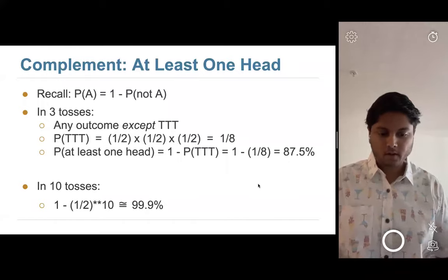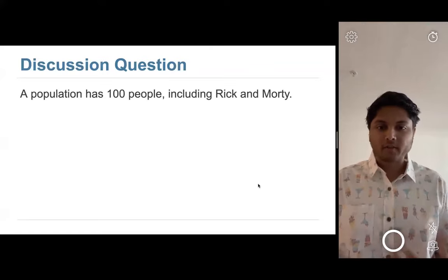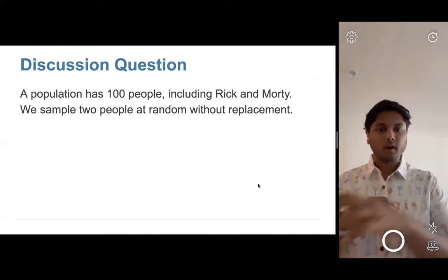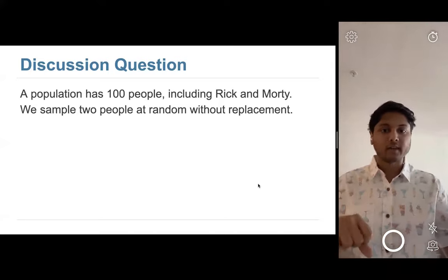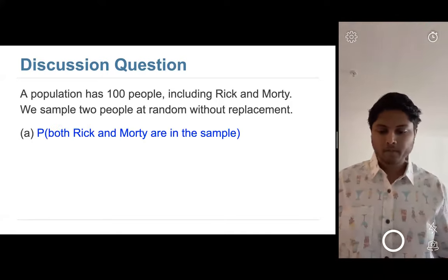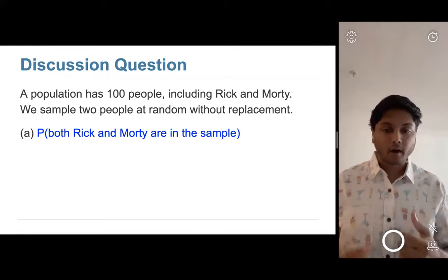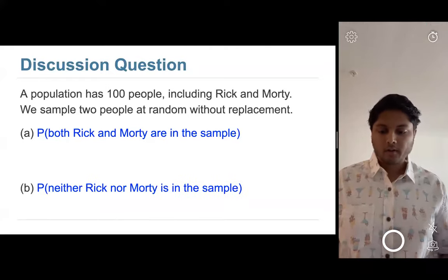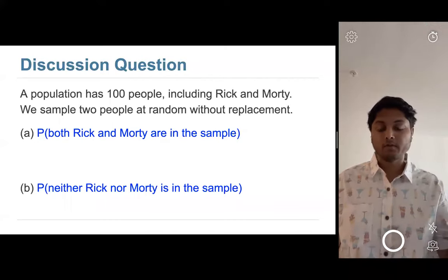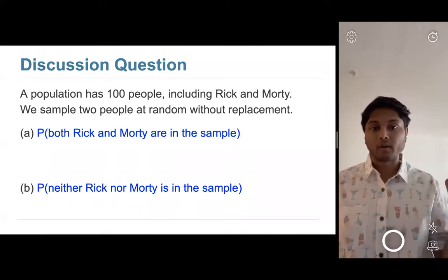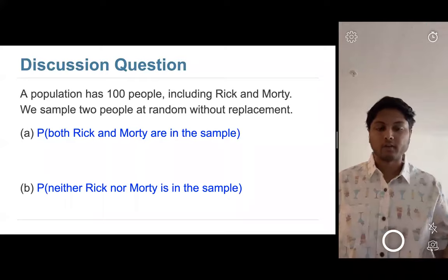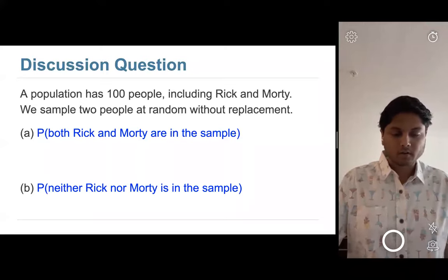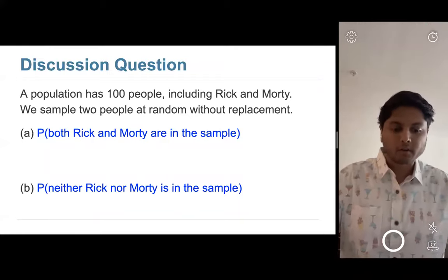Let's do a discussion question. You have a population of 100 people and two of them are called Rick and Wordy. We sample two people at random without replacement — you take one person out of 100, then another from the remaining 99. First question: what's the probability that both Rick and Wordy are in our sample of two? Second question: what's the probability that neither Rick nor Wordy is in the sample? Try to think through it and use the four different methods we discussed.